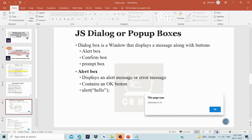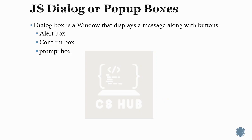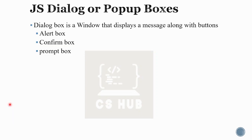Now let's look at dialog boxes, also called popup boxes. A dialog box is a window that displays a message along with buttons. There are three types of dialog boxes in JavaScript: the alert box, the confirm box, and the prompt box.